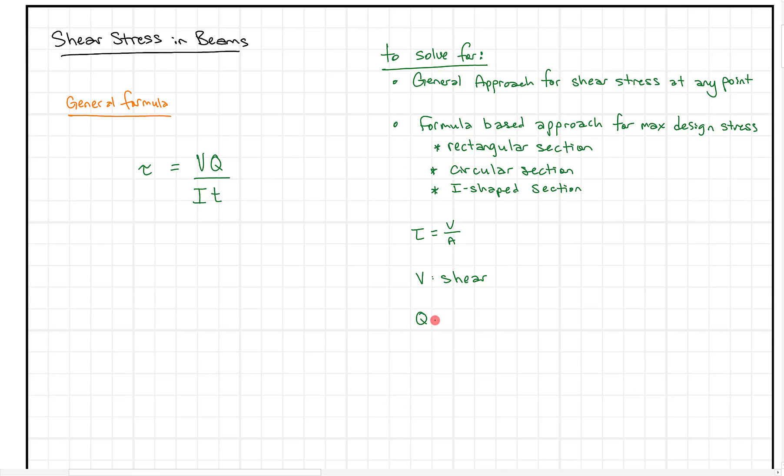And we also have Q, where Q is the first moment of area. This is a bit of a funny term, but if we have some shape that we're trying to find shear stress in, here's our shape, here's the neutral axis. Let's say we want to find the shear stress at a certain point up here. We're going to take all the area above that point, and we'll call this A prime.